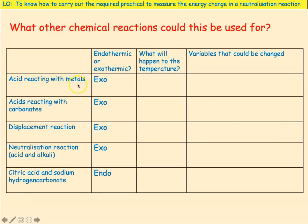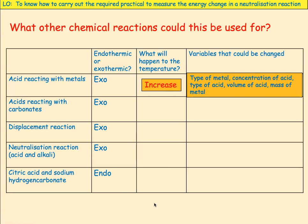For instance, an acid and a metal is exothermic, so you'd expect a temperature increase. You could change the type of metal, the concentration of acid, the type of acid, the volume of acid, or the mass of metal, but you would do the whole thing in the same way as this practical.